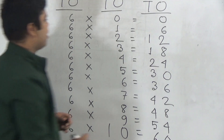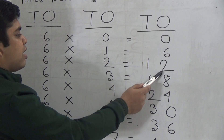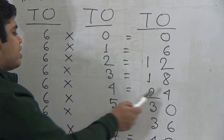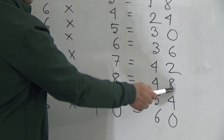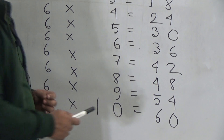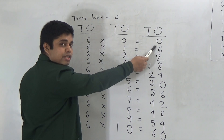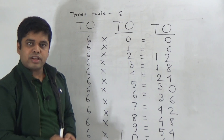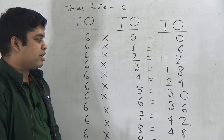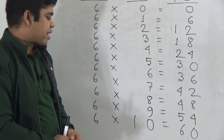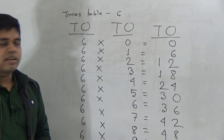And 6 tens are 60. My dear students, please read with me: 6 zeros is 0, 6 ones is 6, 6 twos are 12, 6 threes are 18, 6 fours are 24, 6 fives are 30, 6 sixes are 36, 6 sevens are 42, 6 eights are 48, 6 nines are 54, and 6 tens are 60. So my dear students, this is Times Table 6. Now I will erase this and start to write Times Table 7.